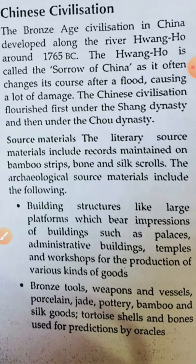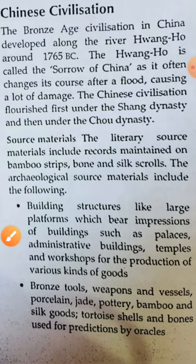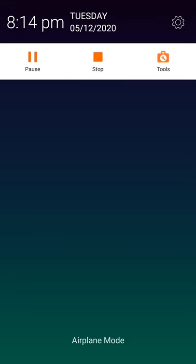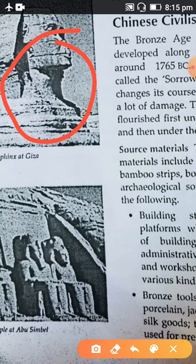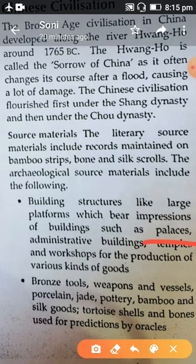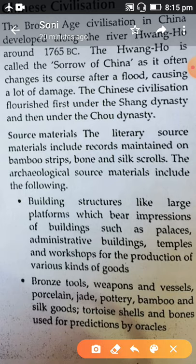For Chinese civilization, we again study literary and archaeological source materials. Literary source materials include bamboo strips, bones, and silk scrolls. Archaeological source materials include building structures like palaces, administrative buildings, temples, and workshops for the production of various kinds of goods, as well as bronze tools, weapons, vessels, pottery, bamboo, silk goods, and tortoise shells and bones used for predictions by oracles.